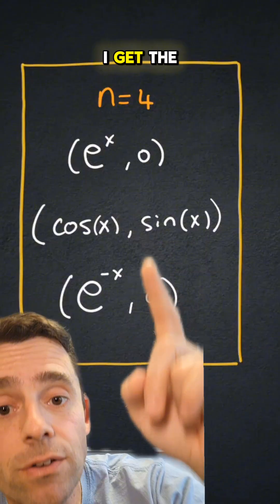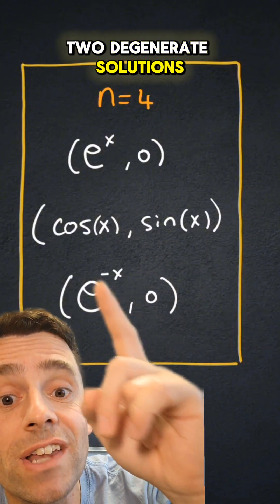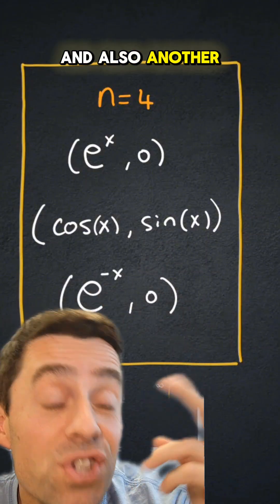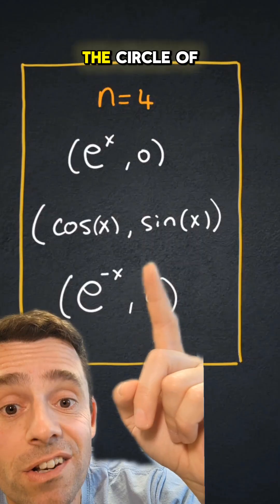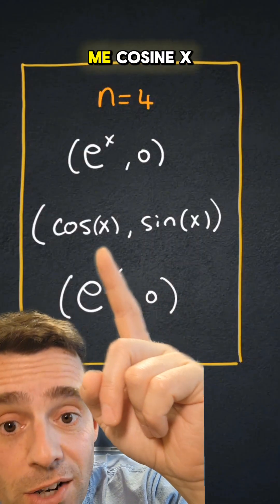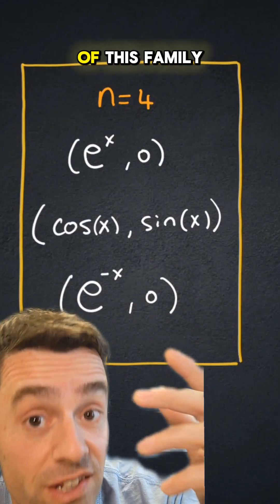For n equals 4, I get the two degenerate solutions and also another degenerate spiral which is just the circle of radius 1, and that gives me cosine x and sine of x as part of this family.